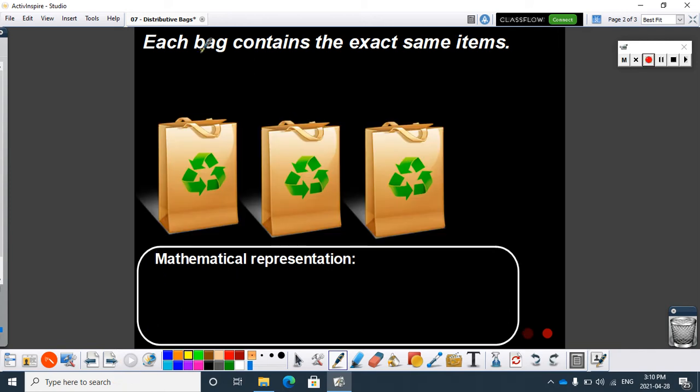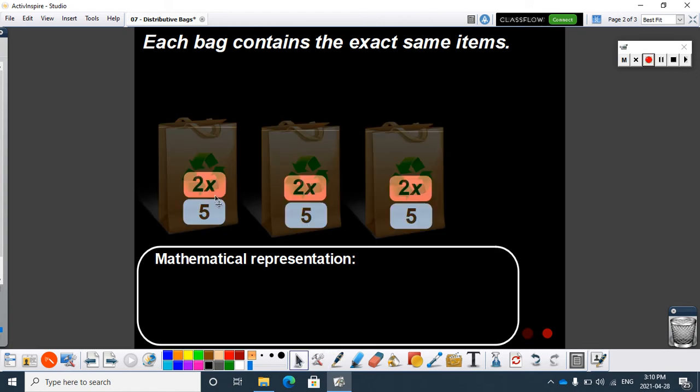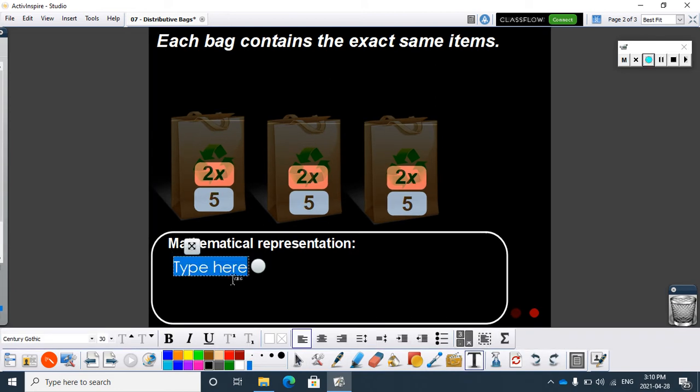Here's another one. Each bag contains the exact same items - that's when the distributive property kicks in, when each bag, well for us each set of brackets, contains the exact same items. I can turn this on here and see what's in the bags. Each bag is 2x plus 5 this time. What I've got now is three bags of 2x plus 5, so each set of brackets has the same polynomial in it.